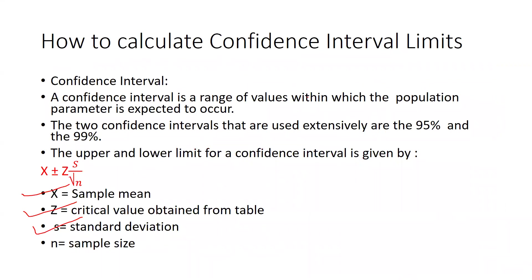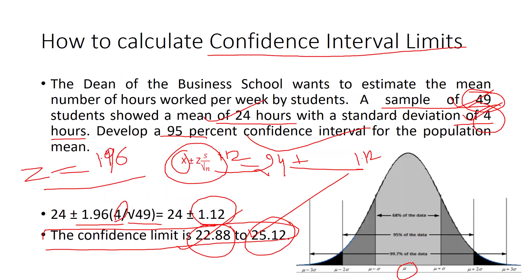I'm sure you now understand how to calculate confidence interval limits, and the meaning of 99 percent, 95 percent, and 90 percent confidence intervals. You should be able to put all the values into the formula and calculate the confidence interval limits. I hope this video is helpful — thank you and keep watching.